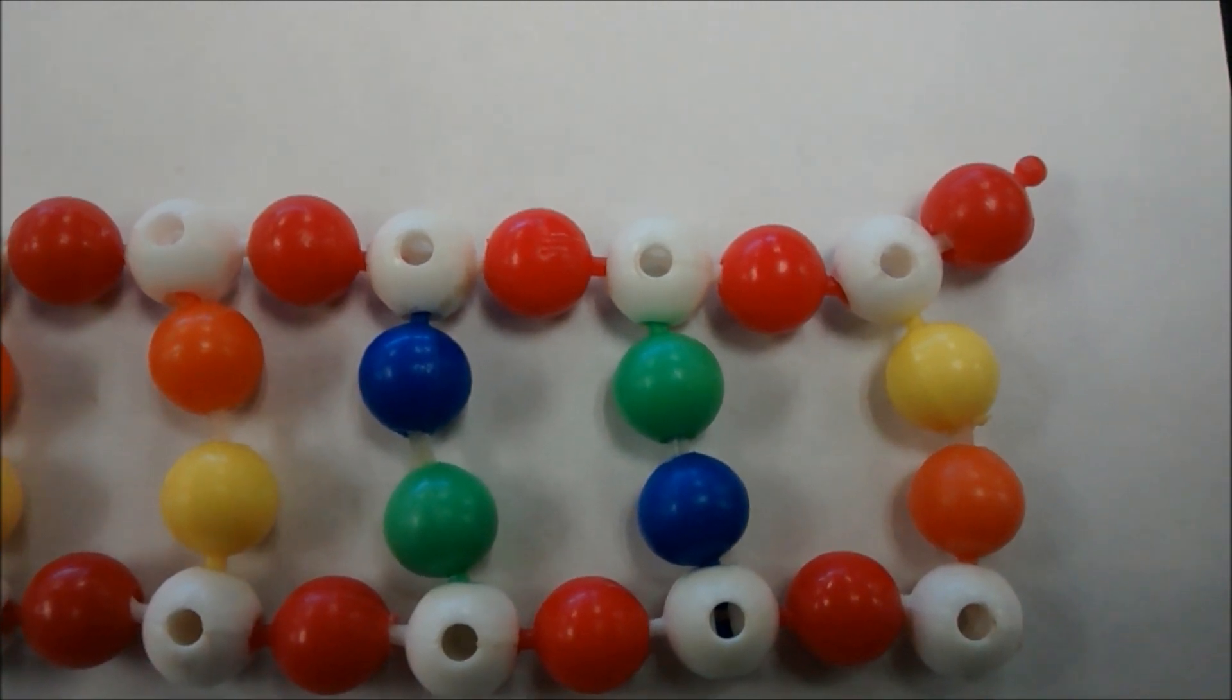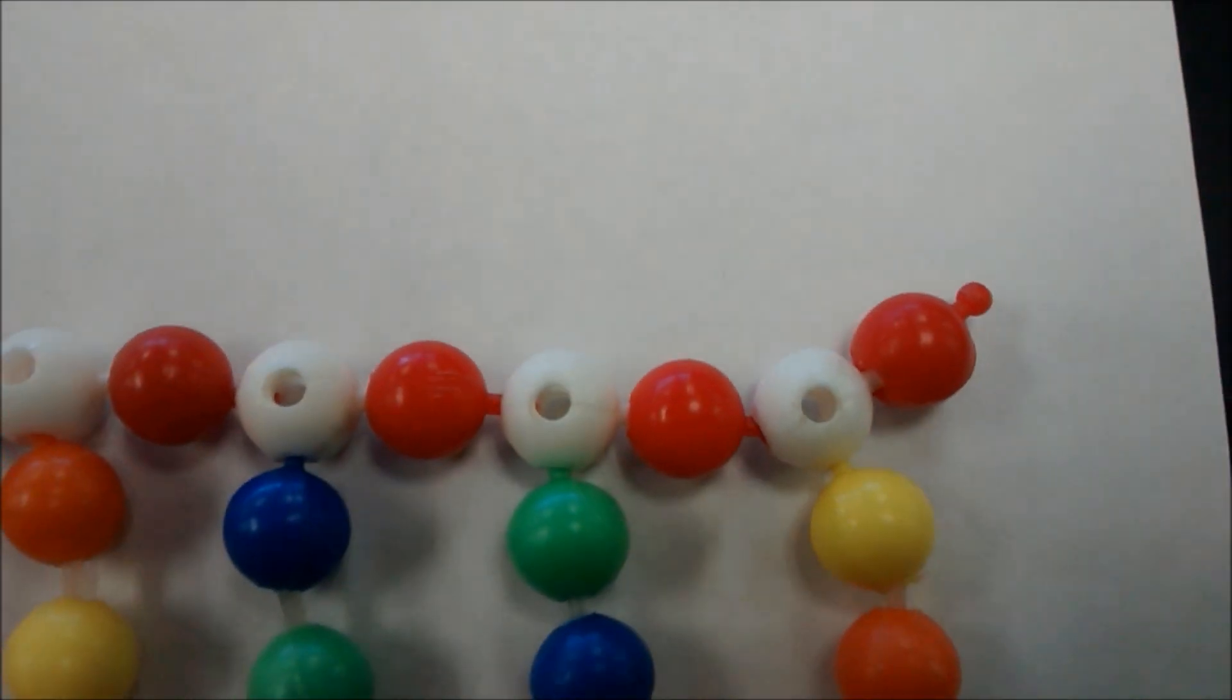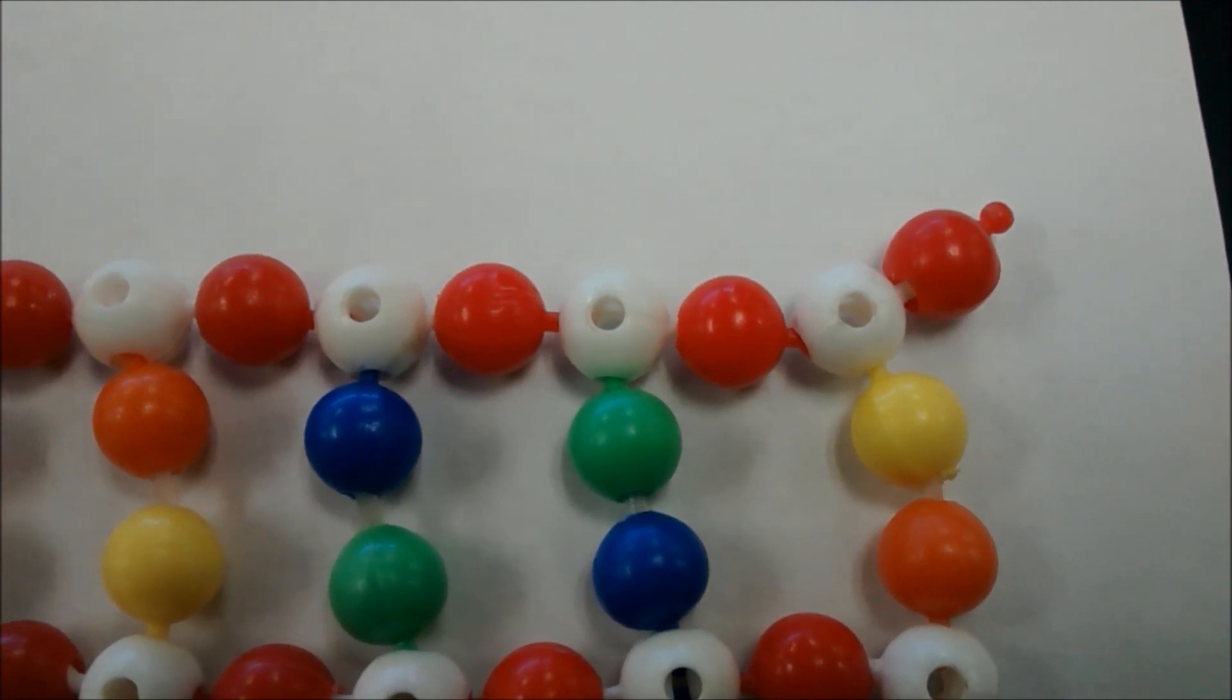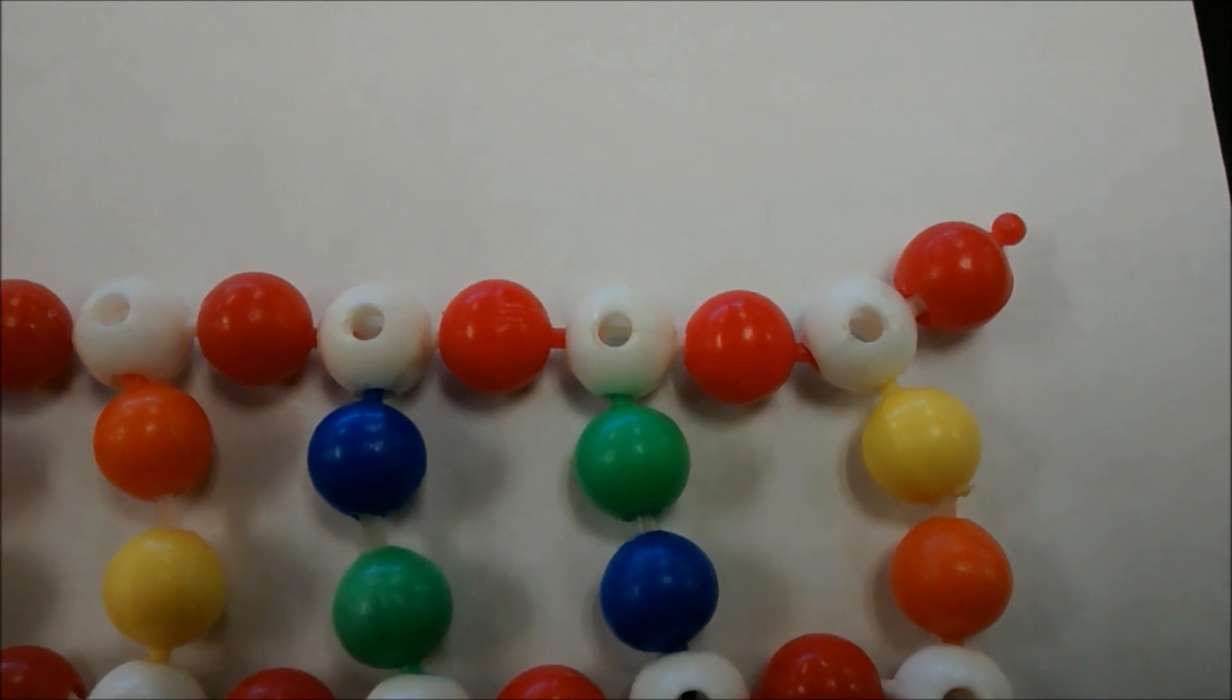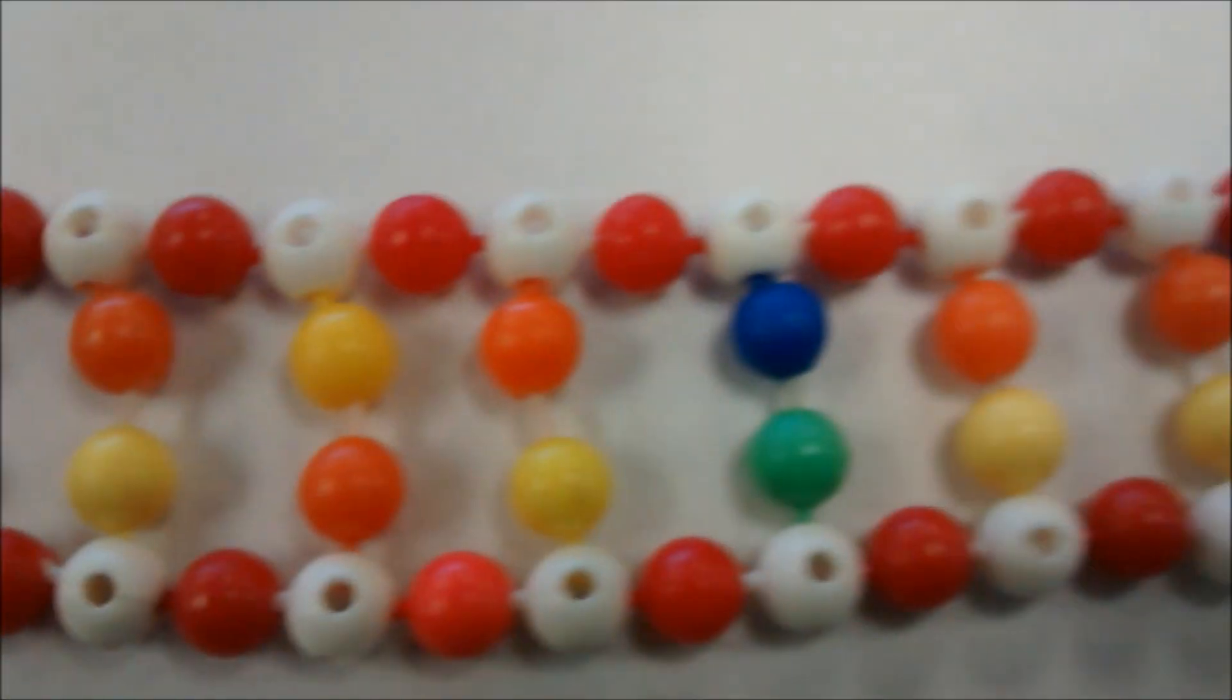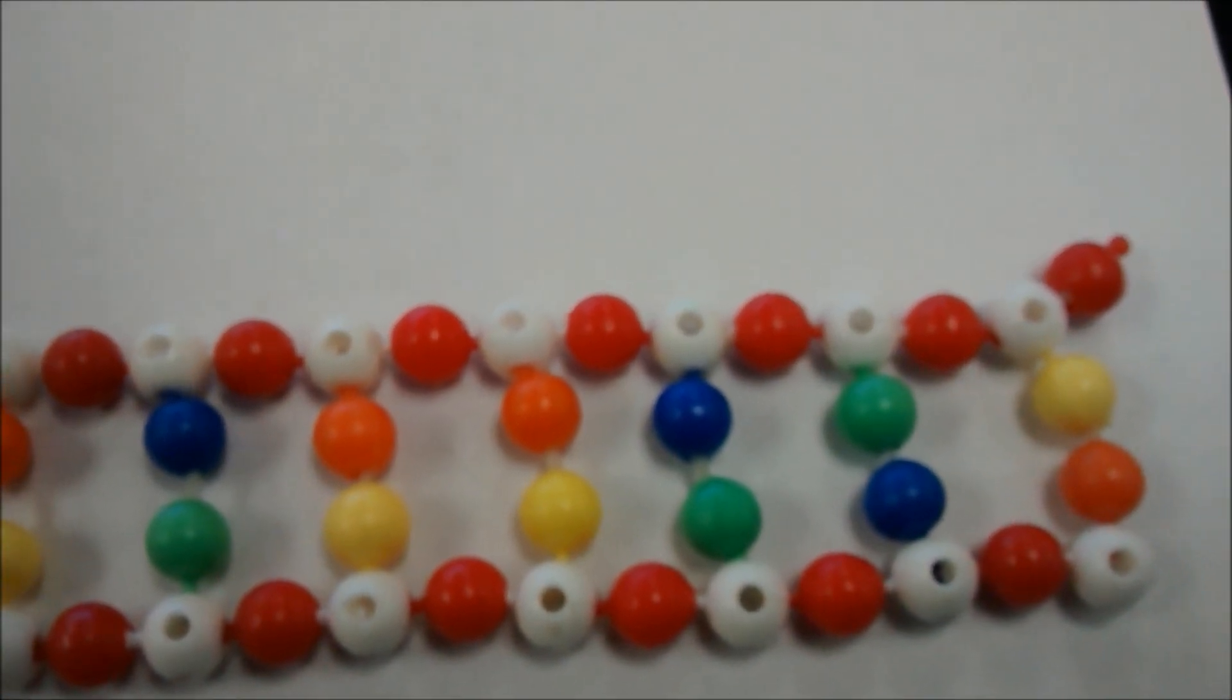So when we look at our strand here, notice that this deoxyribose here has the knob up. It's got a phosphate attached to that three prime position at the moment. And so if we see that, we see that we go from three prime on that side all the way down here to this sugar here that ends with a five prime. So we say that this is our three prime to five prime side.